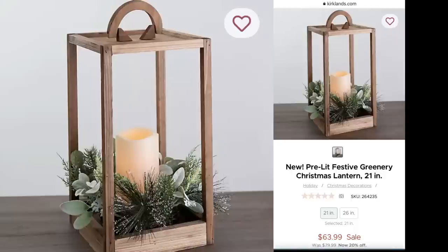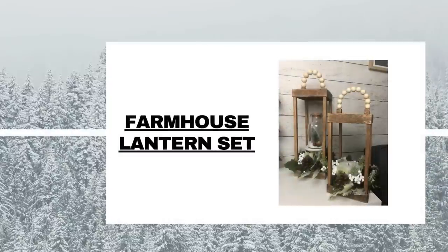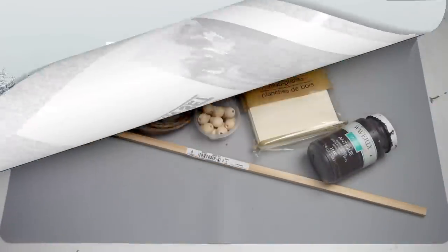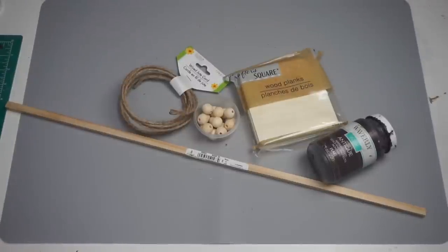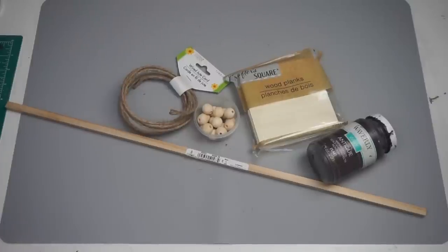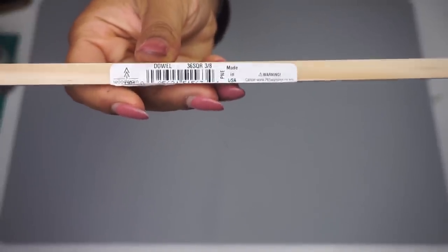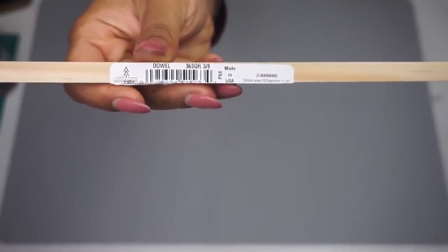Next up, I saw these gorgeous lanterns on Kirkland's site. I mean, they have gorgeous lanterns, period. But I knew that I could make this in no time and with no budget. So I made a set of them. So I got my dowel rods from the Home Depot. They were less than a dollar. And then I'm using some wood planks from Dollar Tree, some wire jute, some wood beads that I picked up from Amazon, and my antique wax paint.